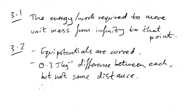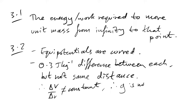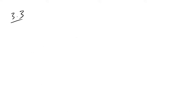Therefore, gravitational field strength is not constant — it's also called the potential gradient. Question 3.3: calculate the escape velocity. As soon as you see escape velocity, think energy: Eₖ = GPE.